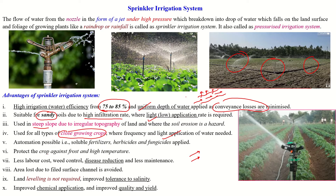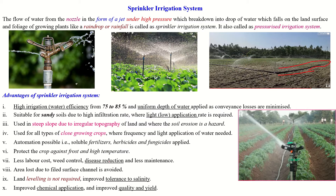This system will protect the crop from higher temperatures and requires less maintenance and less labor cost. Water is applied only where the crop is growing, so weed control is also possible, and as a result disease is also reduced. Area loss due to the construction of bunds or small water carrying canals is reduced because we are using only pipe systems. This system does not require any leveling and can be used in undulating terrain. As a result, application of water and chemicals is possible, and yield and quality of crop output will also increase. These are the major advantages of the sprinkler irrigation system.